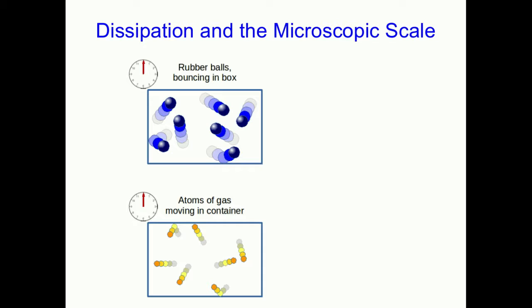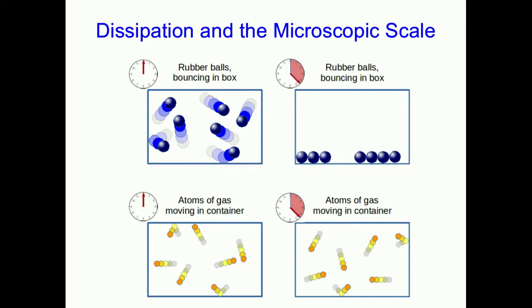If you just wait a little while, and if you're not shaking the box around to introduce more energy into the system, the rubber balls will eventually settle down and be lying stationary in the bottom of the box. But the atoms of gas in the container just keep moving. Why? What's the difference?